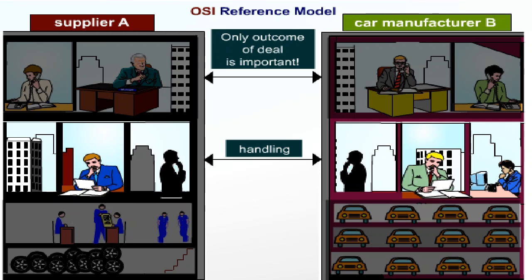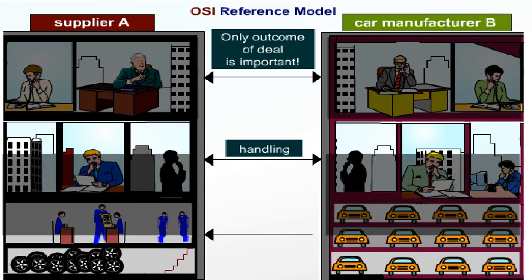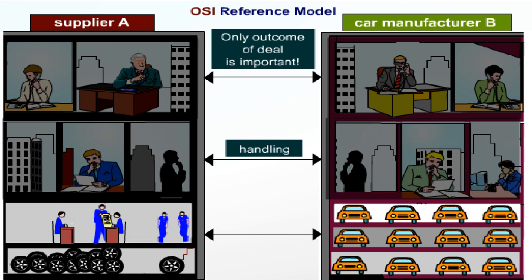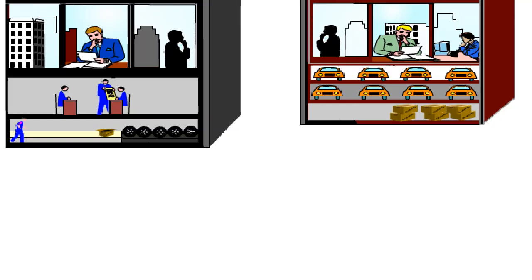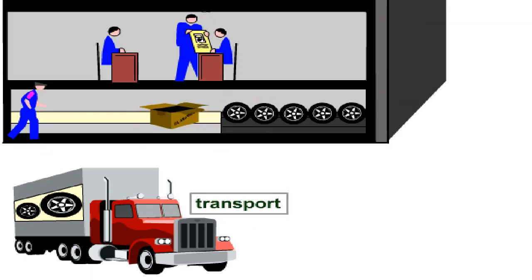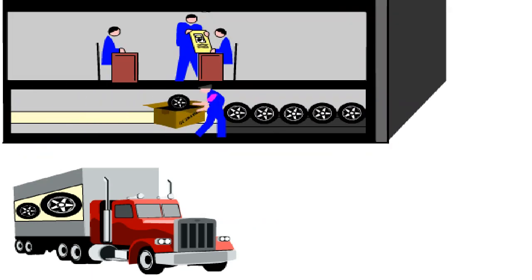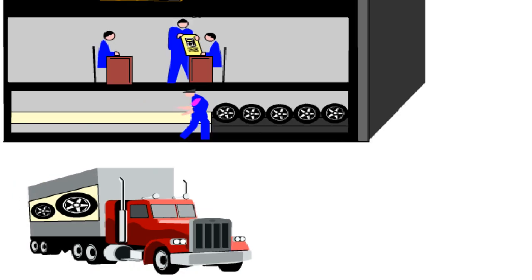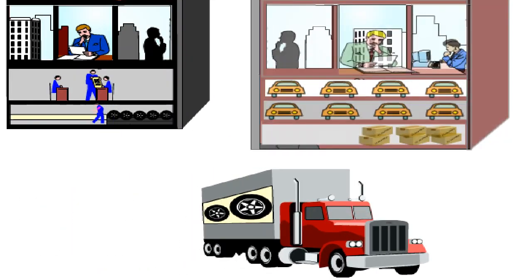The car manufacturer's purchasing department, however, only communicates with the supplier's sales department. As soon as the financial transactions are concluded, the goods can be delivered from A to B. The purchasing and sales departments are not interested in the practical details of delivery. At the supplier, the warehouse workers must pack the tyres and load them on trucks to get them ready for transport.